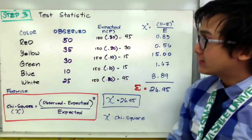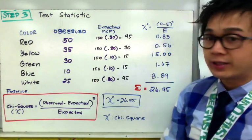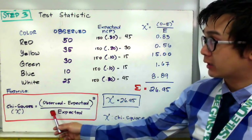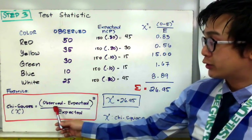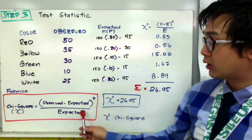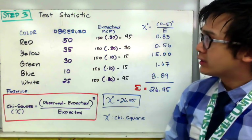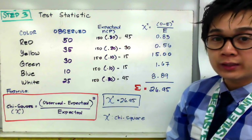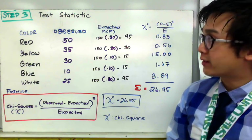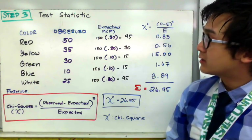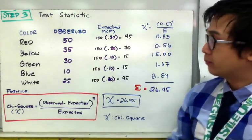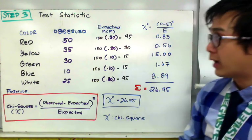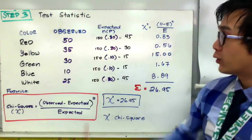Our test statistic for chi-square goodness-of-fit is given by this formula. Chi-square, or our test statistic for this particular hypothesis testing, is observed minus expected squared all over expected. This is a little bit different from the test statistic that we did for mu and proportion in the past. Our test statistic is a little bit more complex than the other hypothesis testing that we had for mu and P.